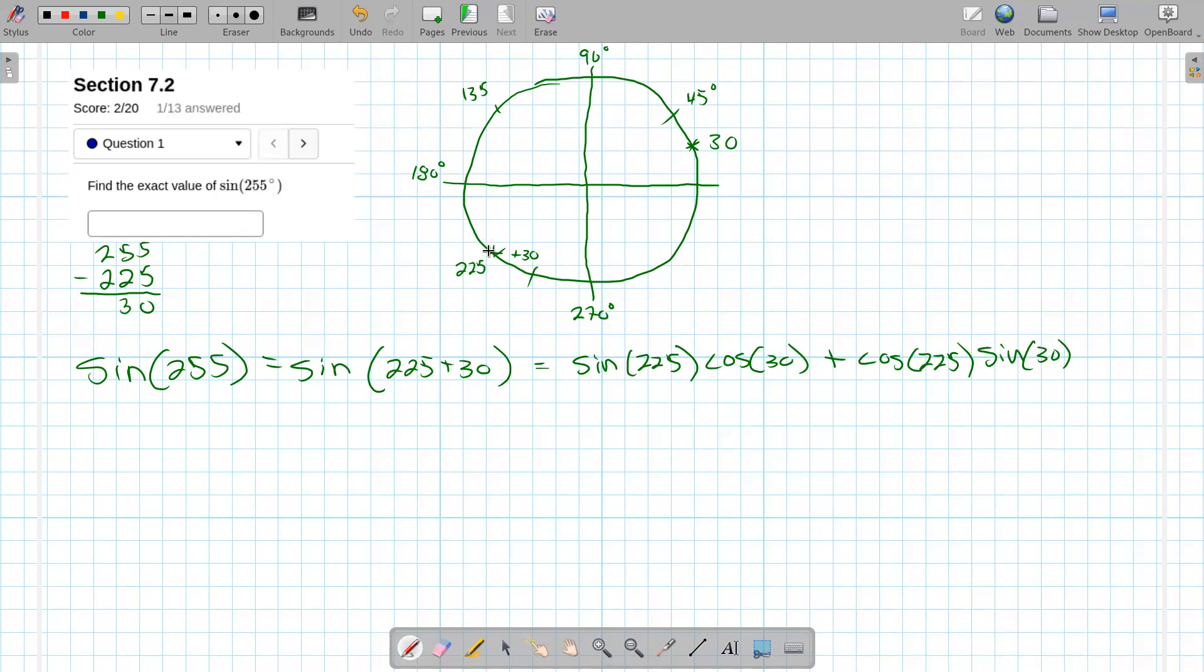Okay, so what do we know? We're in quadrant three for 225 and that's related to 45 degrees. So that means we're going to end up with a negative square root of 2 over 2 for y and a negative square root of 2 over 2 for x, right? In the third quadrant x and y are negative.